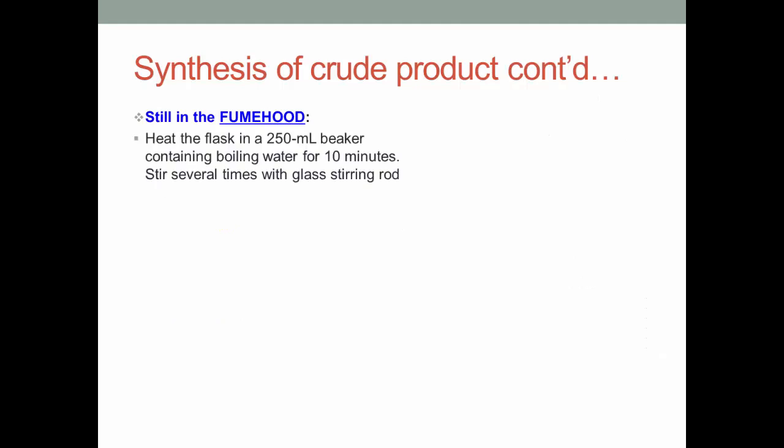Staying in the fume hood, heat the flask in a 250 ml beaker containing boiling water for 10 minutes. Stir several times with a glass stirring rod. Then, remove the flask from the boiling water and add approximately 30 ml of ice water to decompose the excess acetic anhydride.